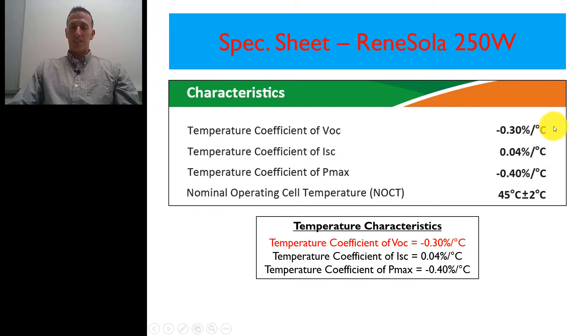The one that we're interested in is right here, the temperature coefficient of VOC. And what that is, is it basically tells us that for every degree Celsius that we change from the module rating, it will adjust the voltage based on this number right here.